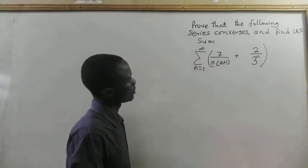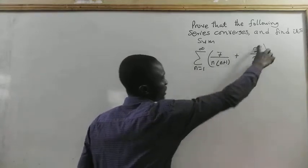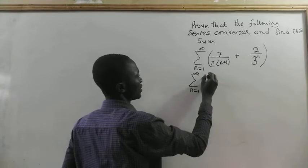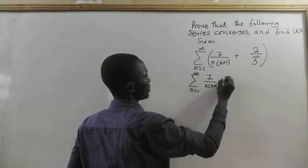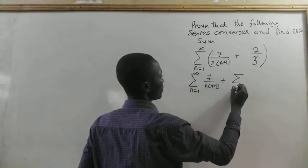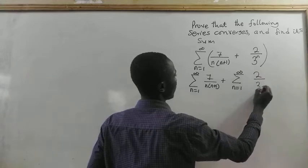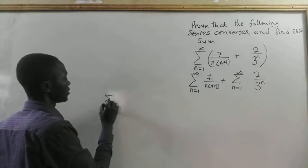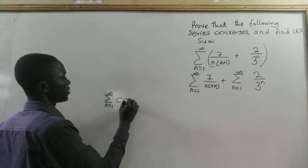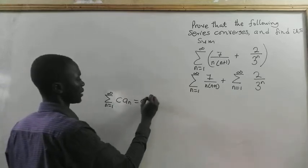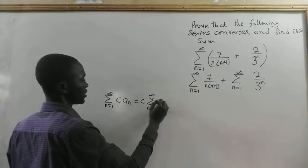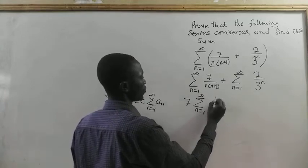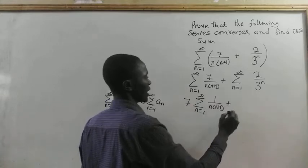Now let's do it simply. Since this is a summation, we can take the sum of the respective components. So we take the sum from n equal to 1 to infinity of 7 divided by n times (n plus 1), plus the sum from n equal to 1 to infinity of 2 divided by 3 to the exponent n. We can factor: 7 times summation from n equal to 1 to infinity of 1 divided by n times (n plus 1), plus the second sum.